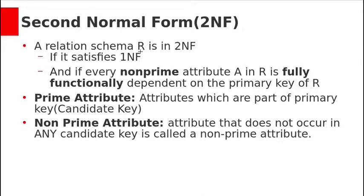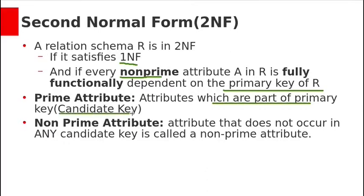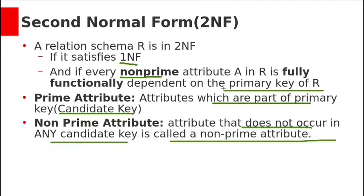A relation schema R is in 2NF if it satisfies 1NF and if every non-prime attribute A in R is fully functionally dependent on the primary key of R. Prime attributes are attributes which are part of a primary key or candidate key. Non-prime attributes are attributes that do not occur in any candidate key. For 2NF to be satisfied, all non-key attributes in relation R must be fully functionally dependent on the primary key.